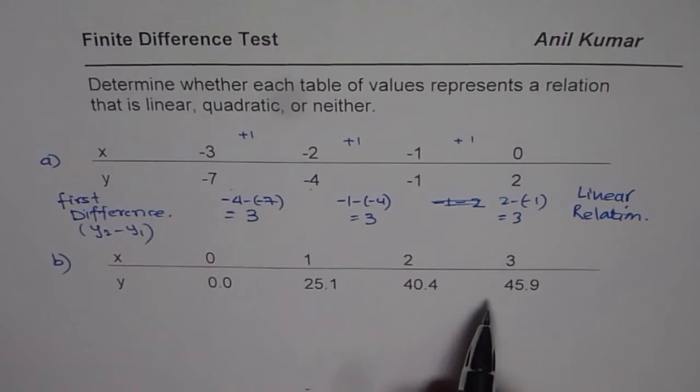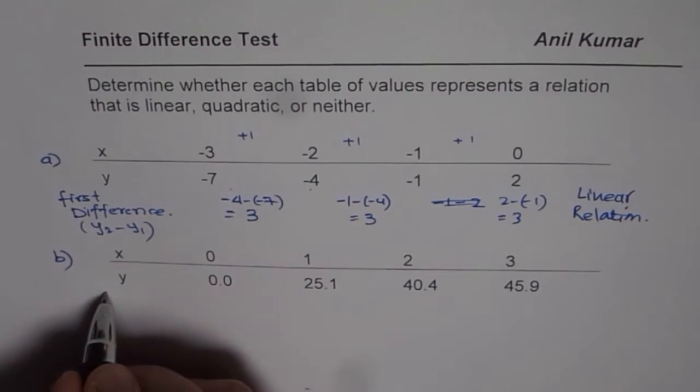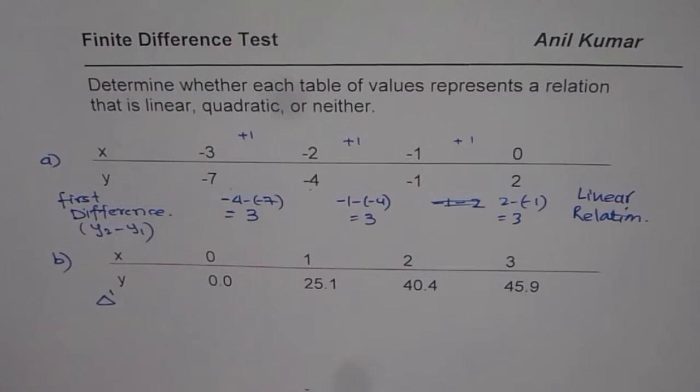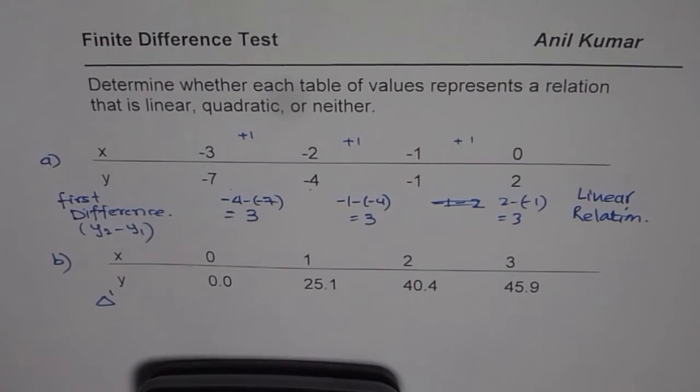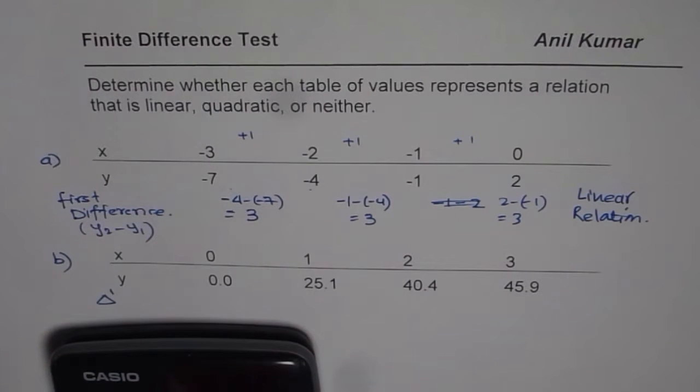Now, let us do the same thing for the second relation. So, let me write first difference as delta 1. We will use calculator for the second one. In this case, we have x values at 0, 1, 2, and 3. The y values are 0.0, 25.1, 40.4, and 45.9.